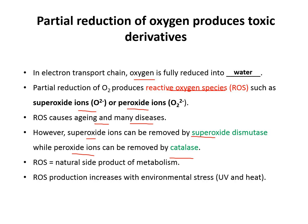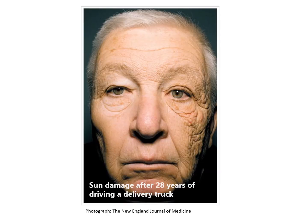ROS is a natural side product of metabolism — it occurs at all times but at a very low level. During times of environmental stress, such as UV or heat exposure, ROS levels can increase dramatically. As an example of aging caused by UV exposure: a man who drove his truck for over 28 years had extensive wrinkles on one side of his face due to constant sun exposure. This aging is caused by ROS. Based on which side was damaged, we can predict he was from the USA, where the driver's side is on the left.